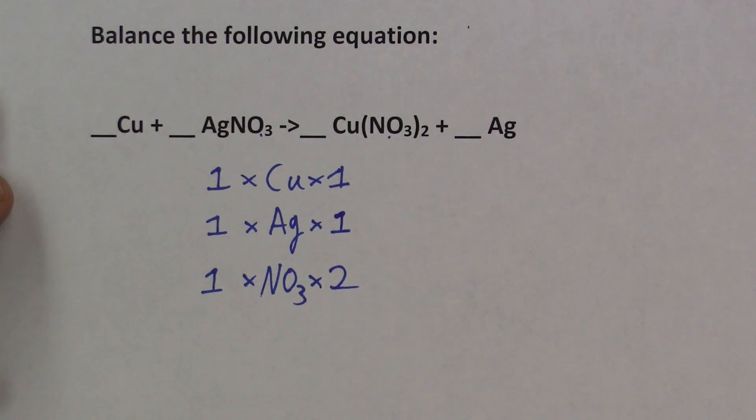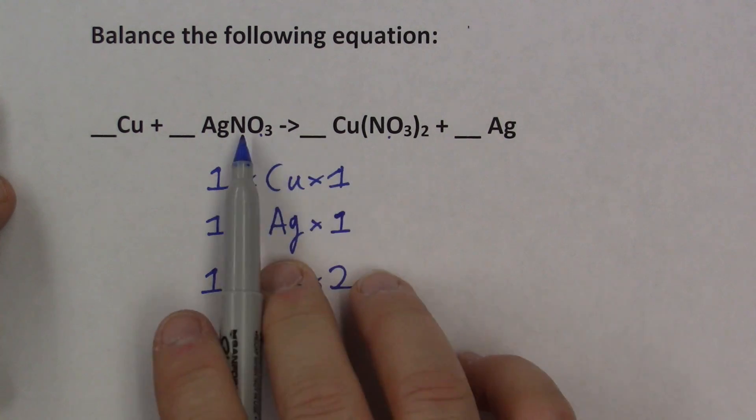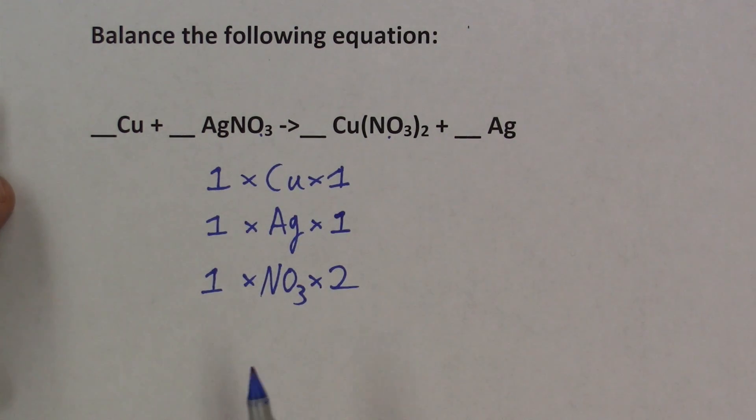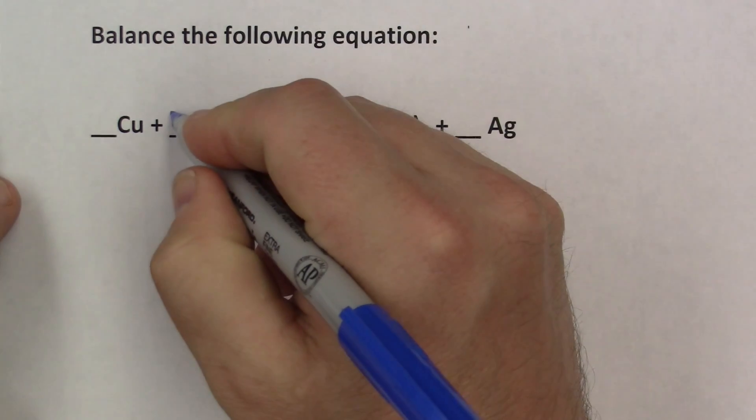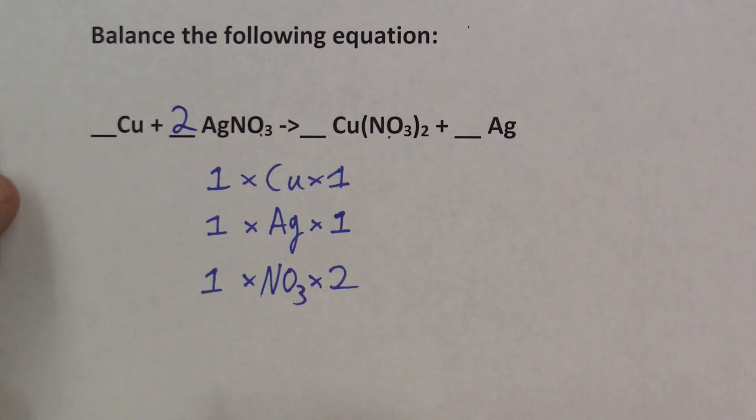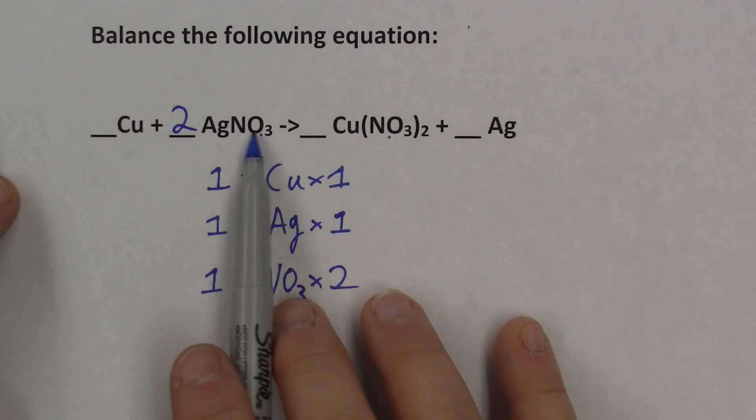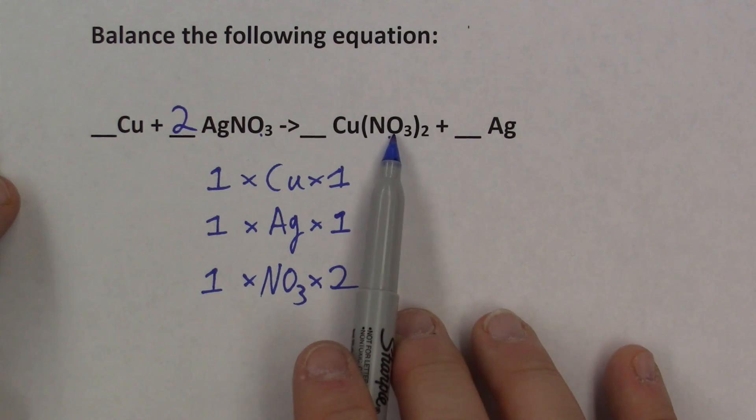Now, as a general rule that I like to follow, when I have polyatomics on both sides of my equation, I like to balance them first. It's not always the case, but it's certainly usually the case, that by balancing the polyatomic first, the rest of the equation will kind of fall into place. So let's balance the polyatomic. On the right-hand side I have two. On the left-hand side I have one. Two and one. That means I have to place a two here to balance the NO3s. Now I have two NO3s and two NO3s.